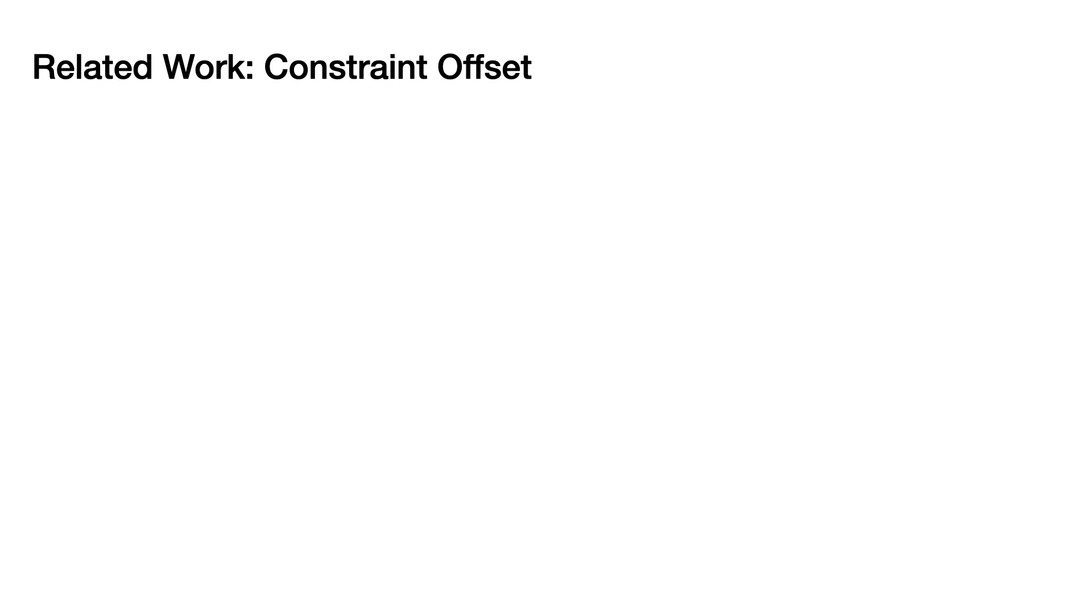Cloth simulations have long applied thickness offsets between shells to help make contact processing easier. So the question is, can we use them for thickness modeling? The answer is that it's tricky. Even for the most recent state-of-the-art cloth simulators like Argus, if we use large time steps, we just get failures.